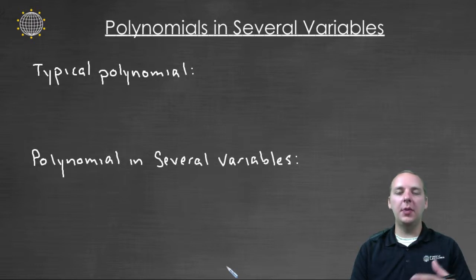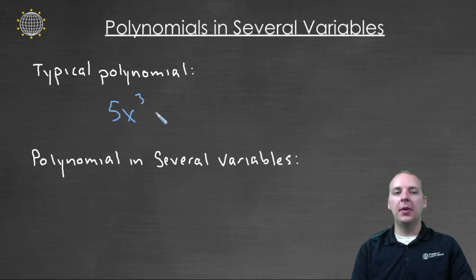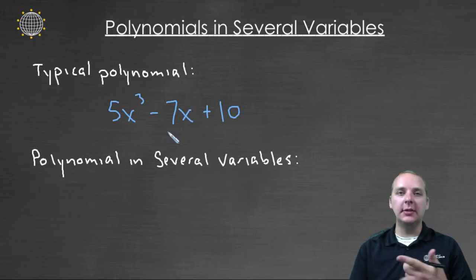When we typically think about a polynomial, we would probably describe something like 5x³ - 7x + 10. It's a collection of terms that are added or subtracted, they have constants and variables, and the variables have exponents that are non-negative integers, like x³ and x¹. Those are the criteria we typically describe when we talk about polynomials.